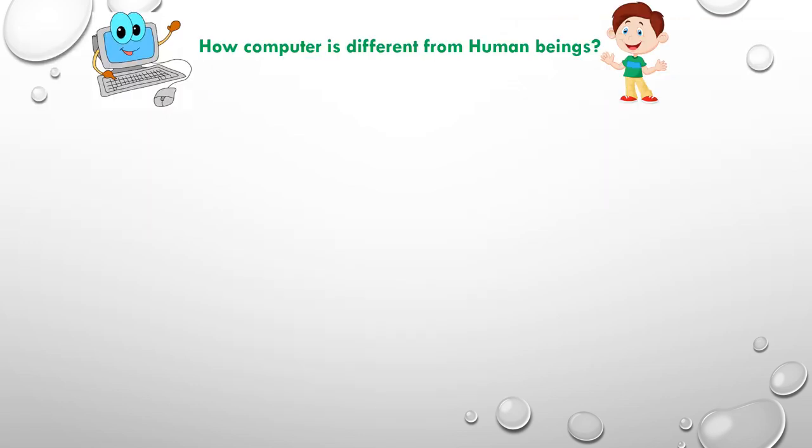Now how is computer different from a human being? We can also do a lot of things. We can sing, we can dance, right? But we are different from a computer. Now we will learn how a computer is different from us.